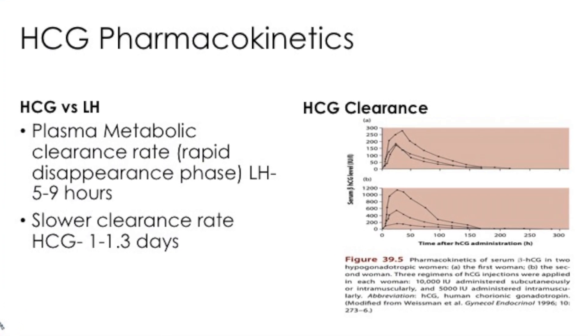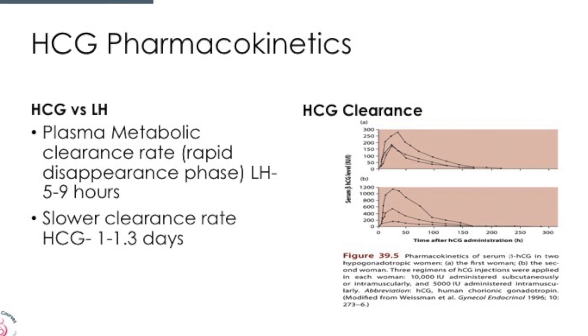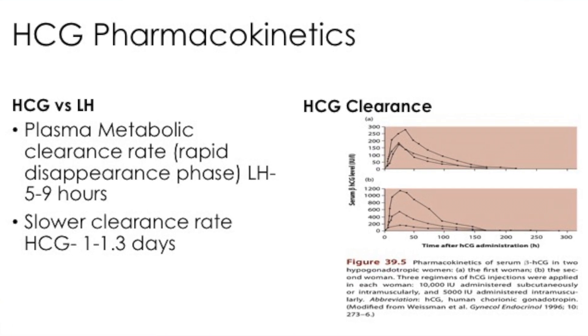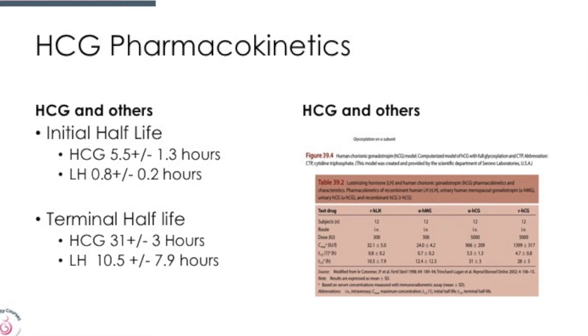Let's look at something very interesting which has a significant impact on how we use these drugs. When you compare the pharmacokinetics, the metabolic clearance rate shows a rapid disappearance period where LH has a very short period of five to nine hours, while the slower clearance rate for HCG is between 1 to 1.3 days — that's a huge difference. The initial half-life for HCG is 5.5 to 1.3 hours, while LH is 0.8 hours. There is a significant difference between HCG and LH in both the initial and terminal half-life, telling us that HCG remains in the system much longer.